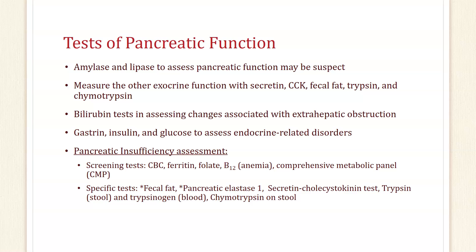Gastrin, insulin, and glucose can be used to assess endocrine-related disorders of the pancreas and GI function in general. For pancreatic insufficiency assessment in patients with cystic fibrosis, screening tests include CBC, ferritin, folate, B12 — looking for anemia — and a comprehensive metabolic panel (CMP). What you're looking at are the consequences of not being able to properly absorb foods: low B12, low folate, low ferritin, and the CMP may show low electrolytes.